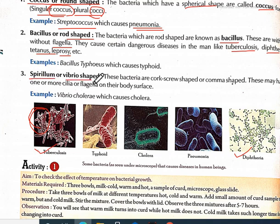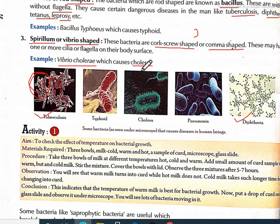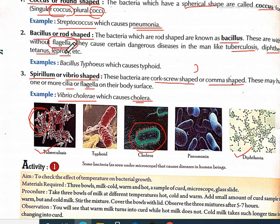Third: spirillum or vibrio-shaped bacteria. These bacteria are cork-shaped or comma-shaped. They may have one or more cilia and flagella on their body surface. For example, Vibrio cholerae which causes cholera. You can see roughness on the surface — these are cilia and flagella. Bacillus bacteria are without flagella, so there is no roughness. But in cholera there is roughness on the outer side. Cholera is spirillum and vibrio-shaped.